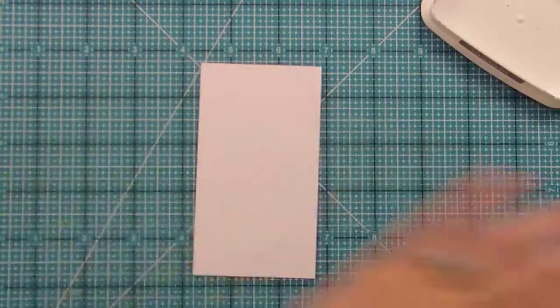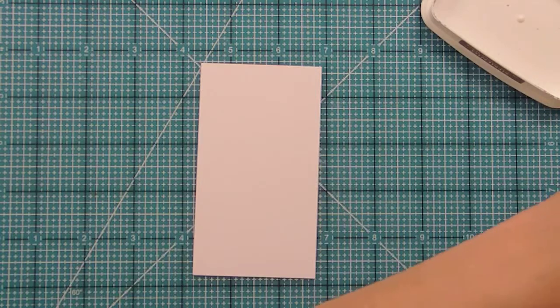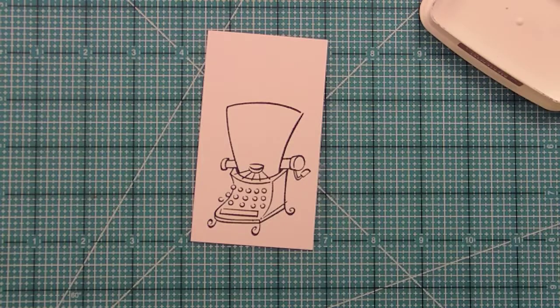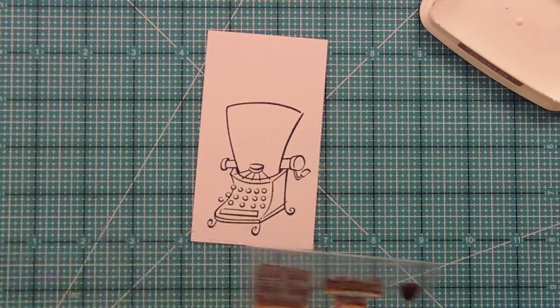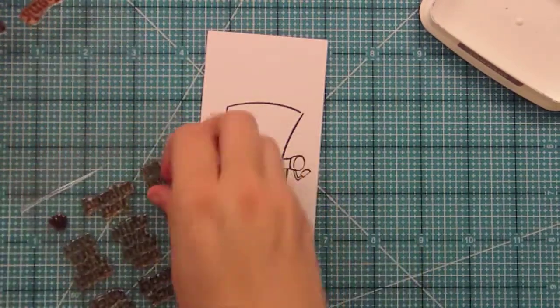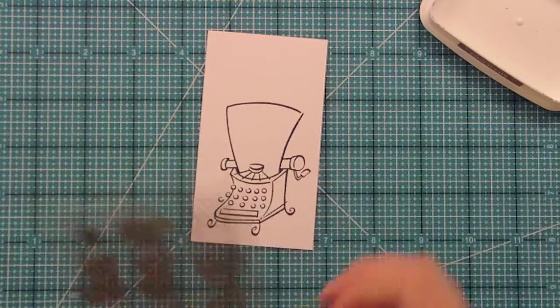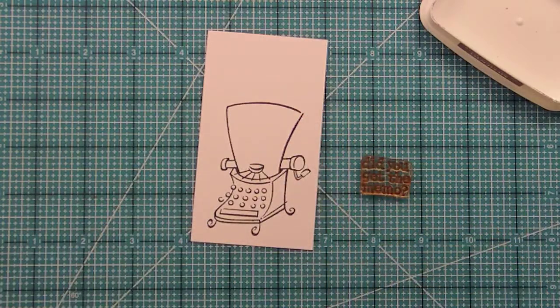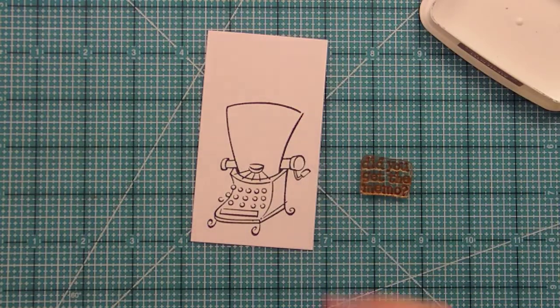And now we're going to stamp again on a white piece of cardstock. Just fast forwarding a bit there. That's because I want to do some Copic coloring and some paper piecing. But the first thing we need to do is add our message. So I'm using 'did you get the memo,' which is a sentiment from Just My Type 2. And I'm just going to stamp that on my paper.